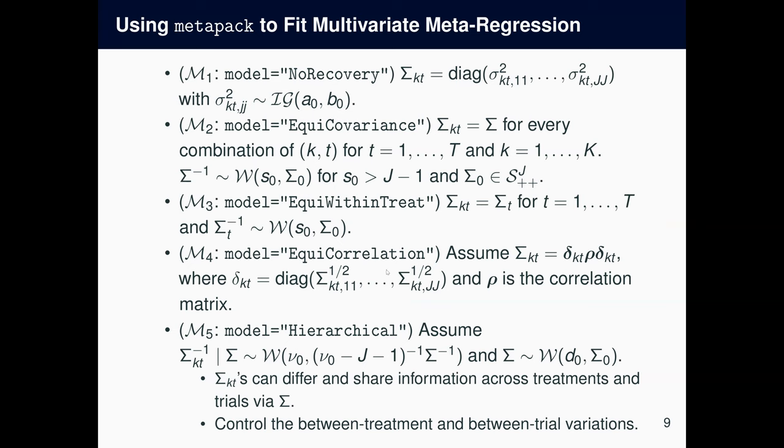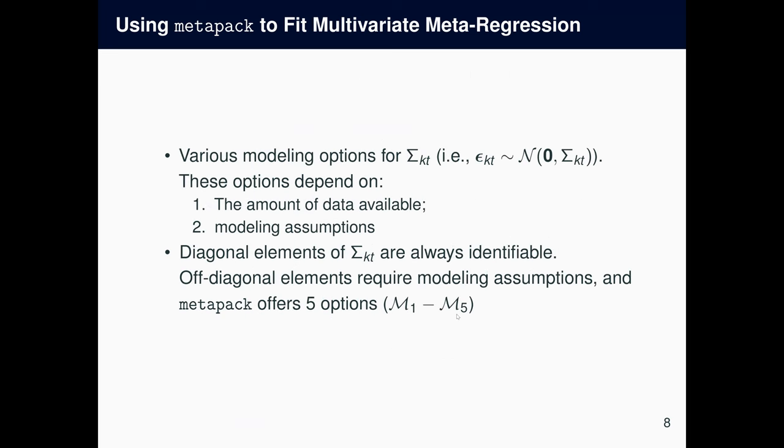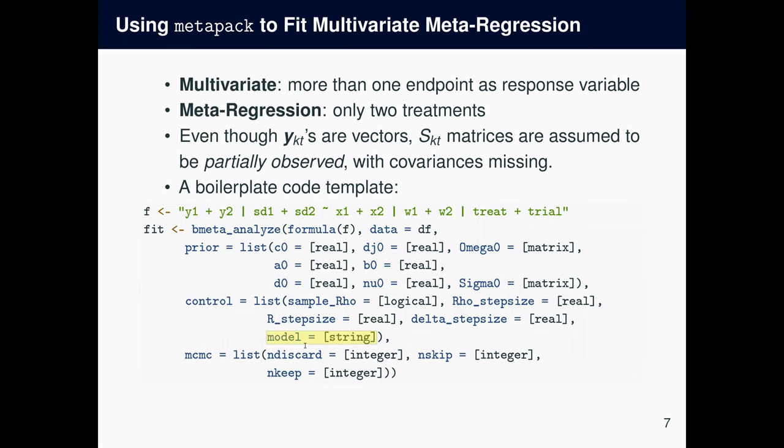The fourth is equi-correlation, which tries to get the best of both worlds. We know that variances are identifiable, but the covariances might not be. So each sigma_KT matrix is decomposed into delta_KT, which is the diagonal matrix of standard deviations, and rho, which is the correlation matrix. So rho doesn't have subscripts, so it's the same for all KT. But the identifiable standard deviations have KT as subscripts. The last one is hierarchical, which allows sigma_KTs to be different for every KT. But by imposing this hierarchical structure, the sigmas borrow information from each other. The conditional mean of sigma_KT is sigma, and the amount of borrowing is controlled by the hyperparameter nu0.